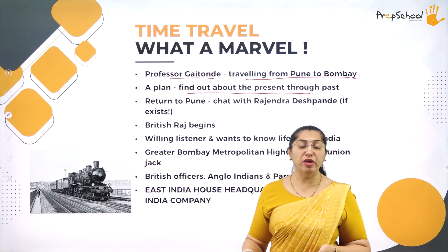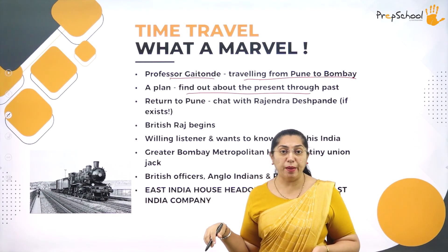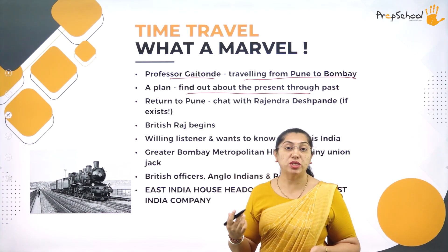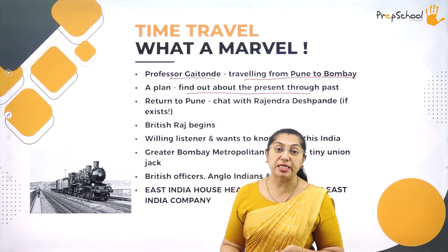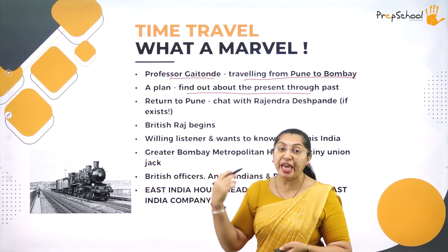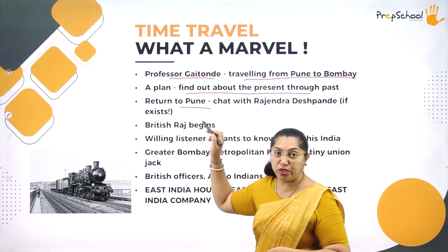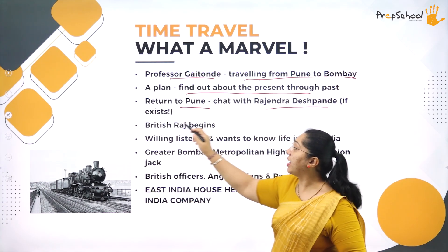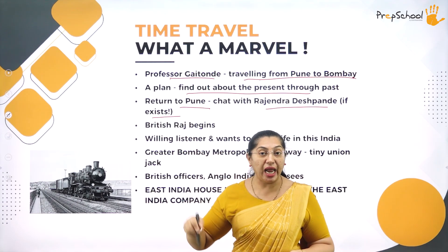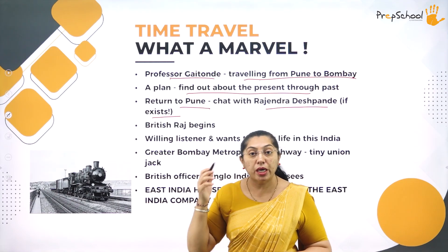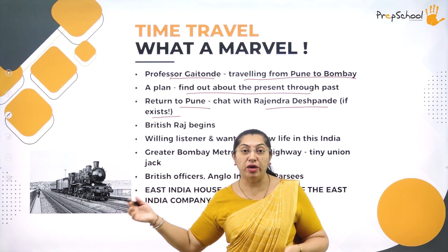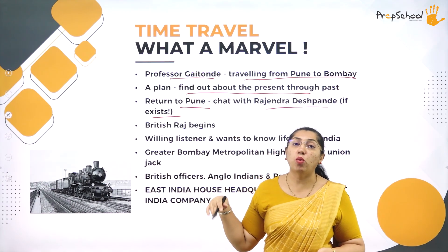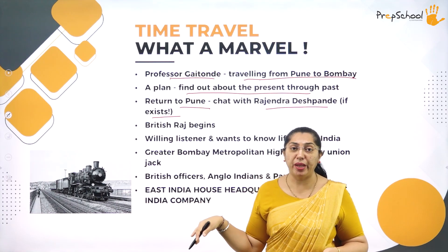As he was traveling from Pune to Bombay, his plan was to find out about the past through the present. He also planned to return to Pune and meet his friend Rajendra. But he doesn't even know whether Rajendra exists or is alive, because he is in the parallel world — only his mind is there, and he doesn't know what is happening in the present.